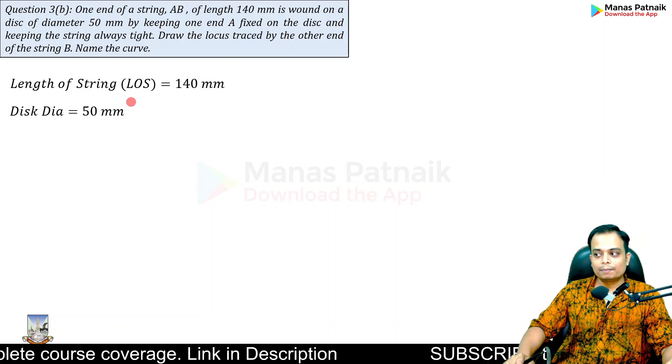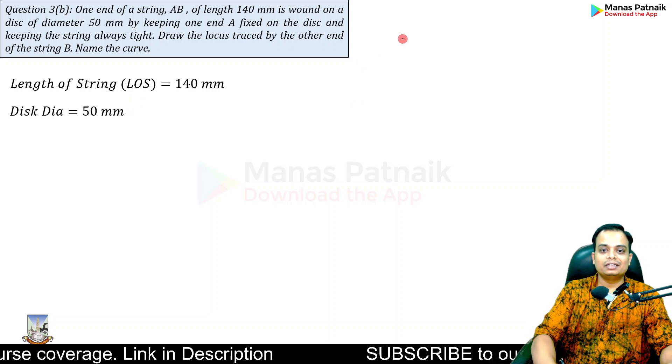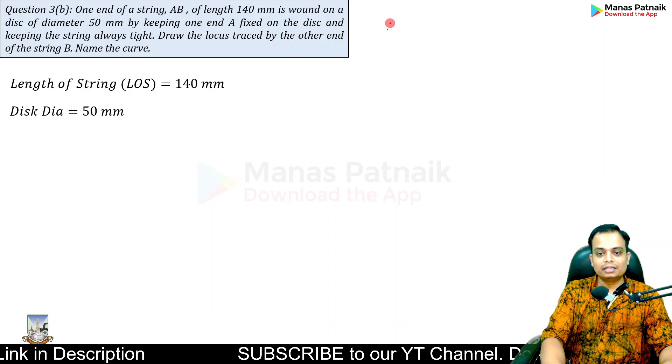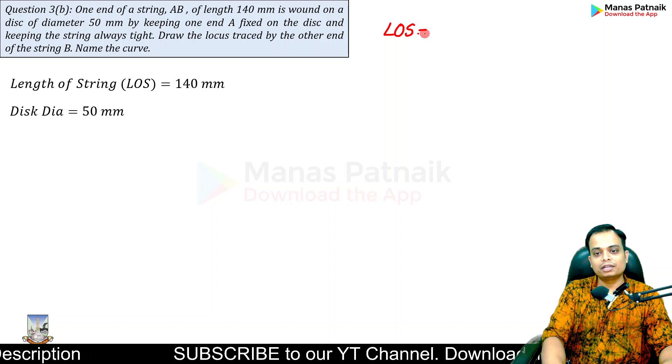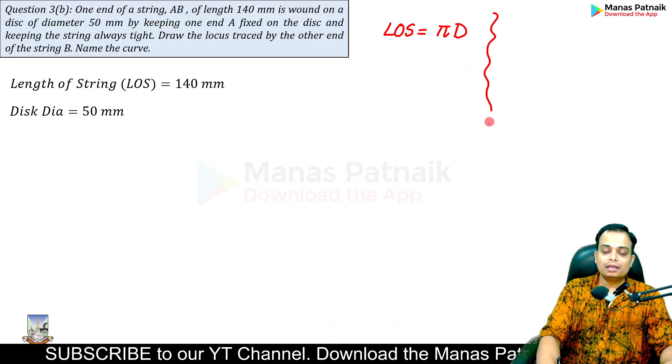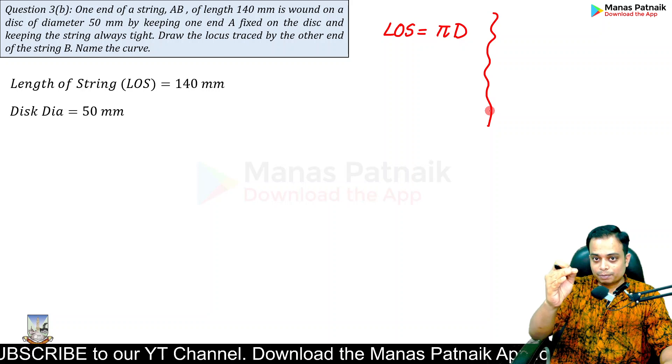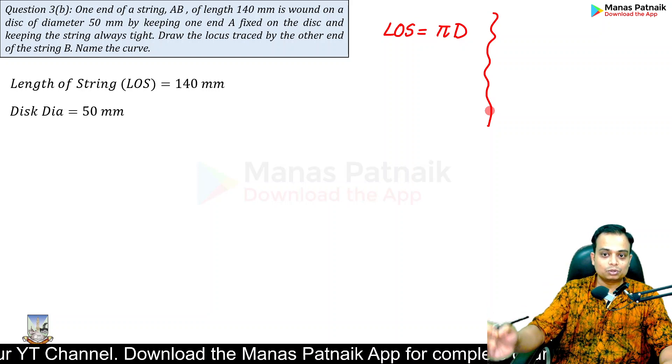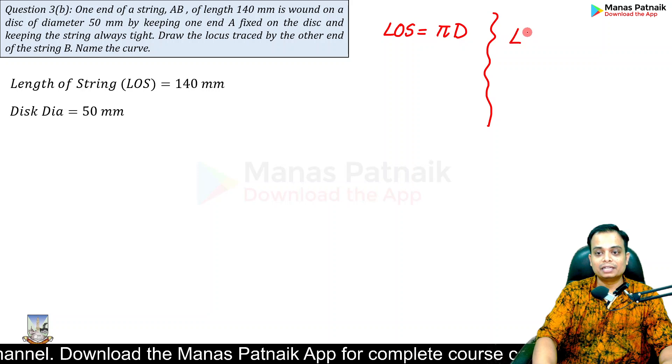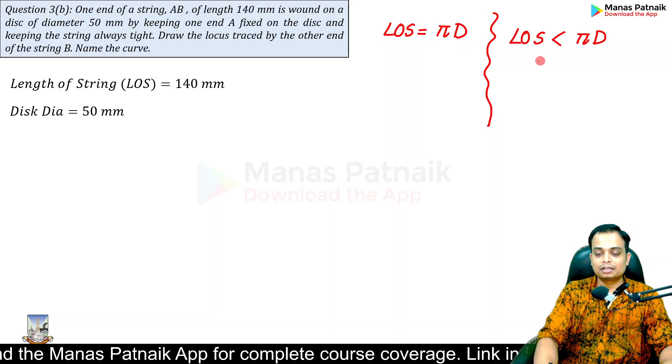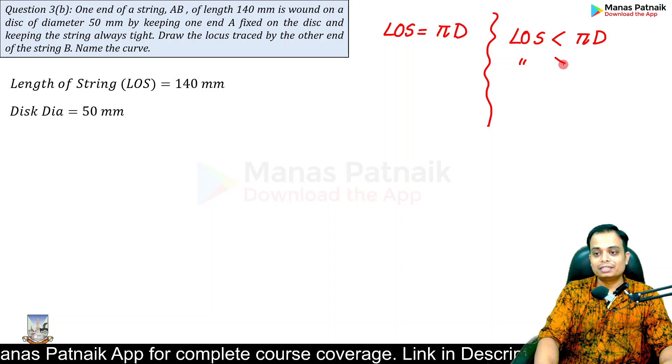Whenever you come across any problem on involute, try to work out whether it is a general case or a comparative case. In a general case, if there is nothing written in the question about the string length, you can assume that length of the string equals the circumference of the circle. When there is specifically mentioned that the length of string is so and so, you need to make a comparison whether the length of string is less than or greater than the circle circumference.